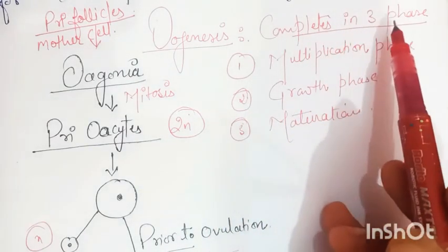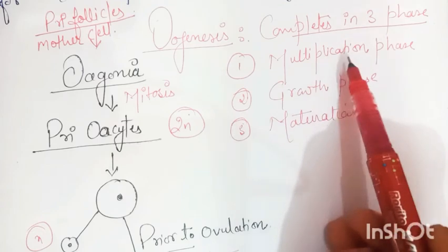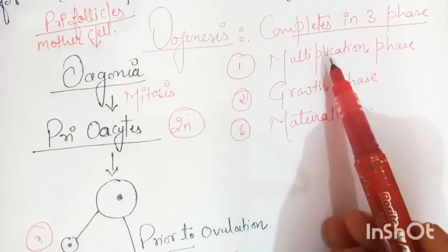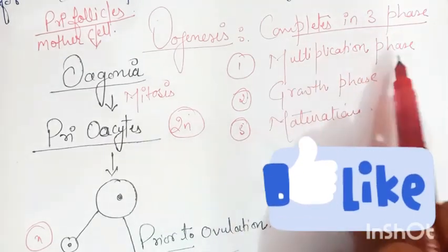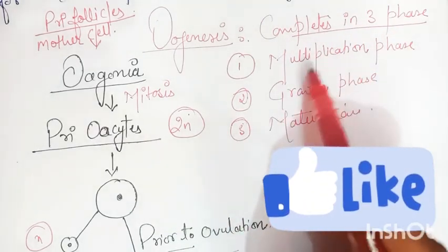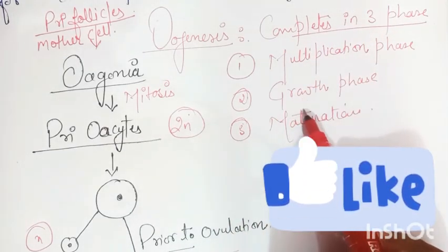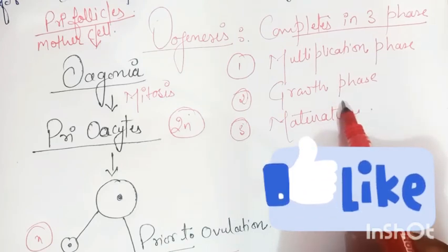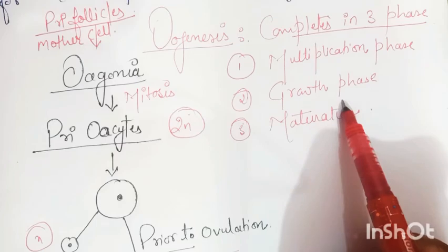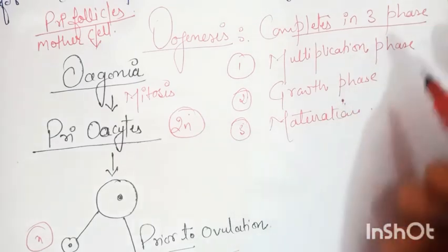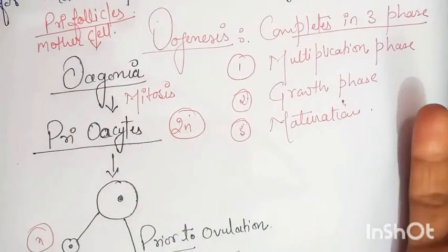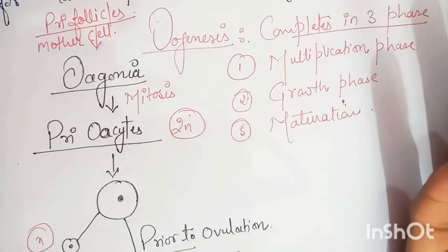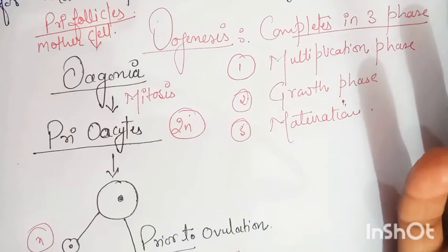Oogenesis completes in three phases. First phase is multiplication phase where cells divide mitotically. In the second phase, that is growth phase, yolk accumulation occurs, and the size of egg depends on the yolk requirement. If it is a mammal's egg, then there is no need for a lot of yolk because there is placenta for nourishment.